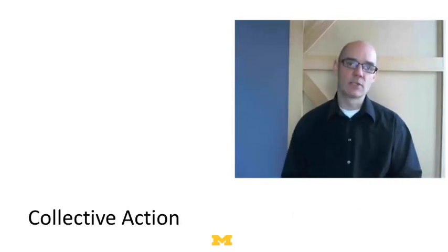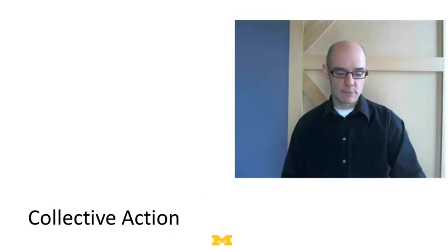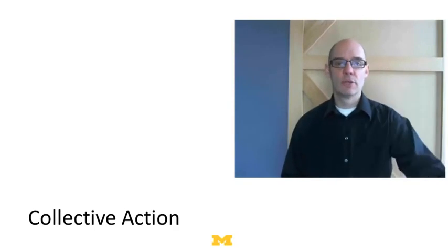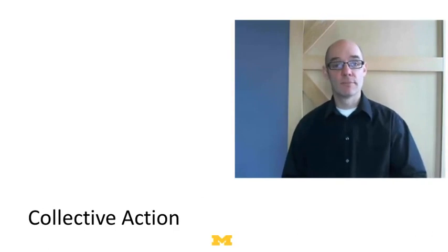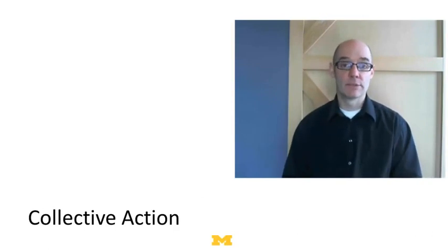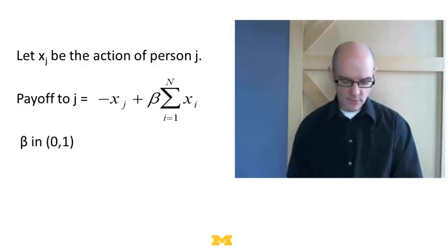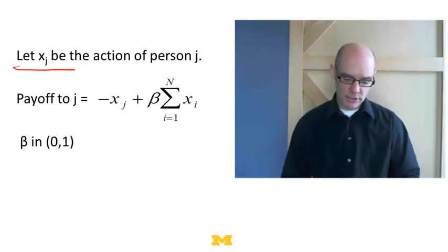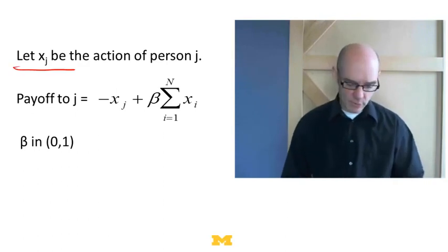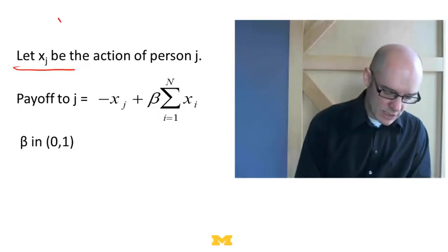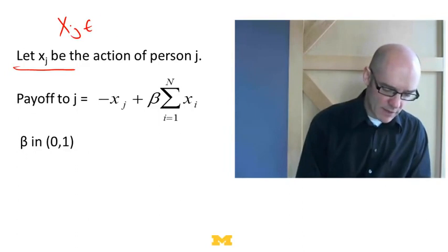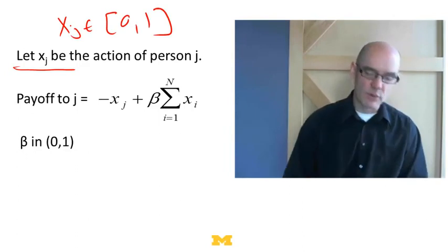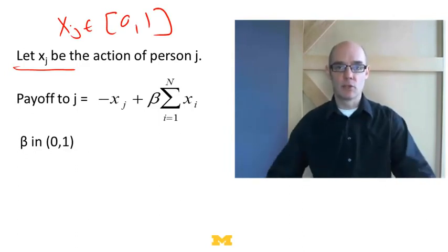The first thing we're going to talk about is called a collective action problem. In a collective action problem, I make some choice: do I contribute? There's a cost to me to contribute, but there's a benefit to everyone else. Let's let xj be the action of person j. We'll assume that xj is some amount of effort, anywhere between 0 and 1. It's how much you're contributing to the public good.